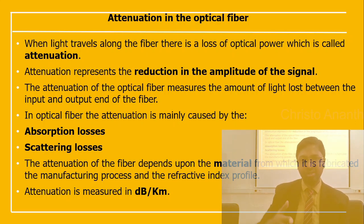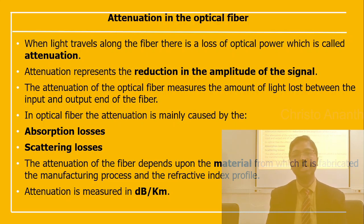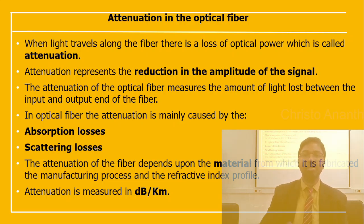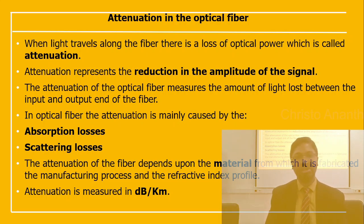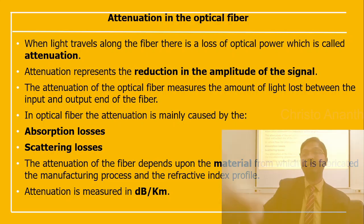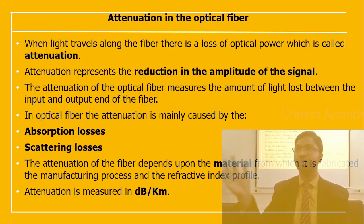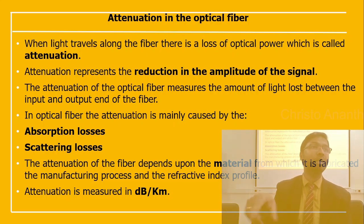When light travels along an optical fiber, there is a loss of optical power — this is called attenuation. Attenuation represents the reduction in amplitude of the signal between the input and output ends of the fiber. In optical fiber, attenuation is mainly caused by absorption losses and scattering losses, and it depends on the material, the manufacturing process, and the refractive index. It is measured in decibels per kilometer.